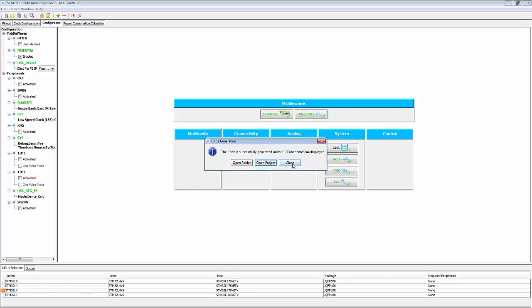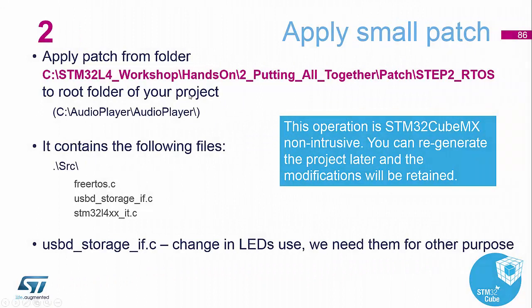As mentioned earlier, we don't want to open the project yet because we need to apply our patch — so select Close. We need to add some source files containing all the various elements we are using: FreeRTOS.C with the contents to control FreeRTOS, the USB control since we've added a USB task, and the SysTick interrupt handler since SysTick is now controlling FreeRTOS. Those are the files we need to patch into our created project.